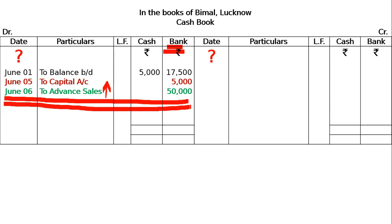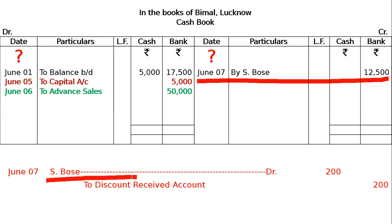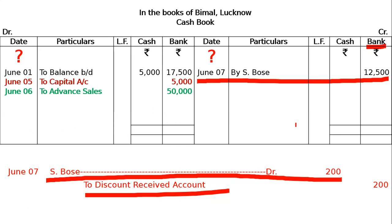Asbos account ₹12,500 — then paid Asbos by cheque with discount received. Payment to Asbos was made by cheque, so: Asbos account debited to bank account and to discount received account. On the payment side, Asbos account is debited ₹12,500 + ₹200 = ₹12,700; discount received is ₹200 and bank account credit is ₹12,500. When the cash book is complete, we note Asbos to discount received.